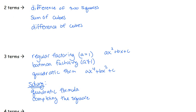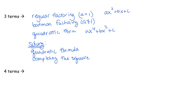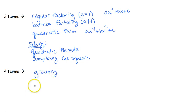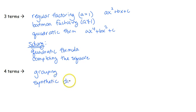And last: if you are trying to factor or solve and you are given four terms, the first option you want to try is to factor by grouping. If that doesn't work, then you need to use synthetic division. Alright, make sure that you study for your quiz tomorrow. We're out.